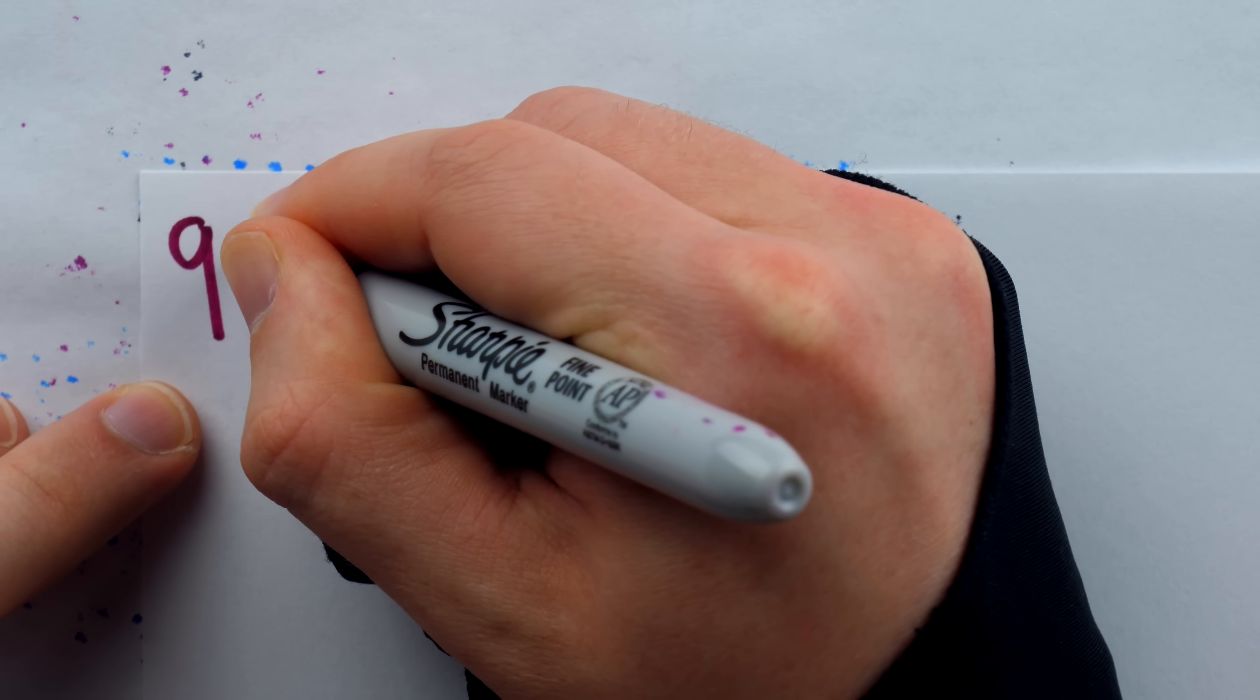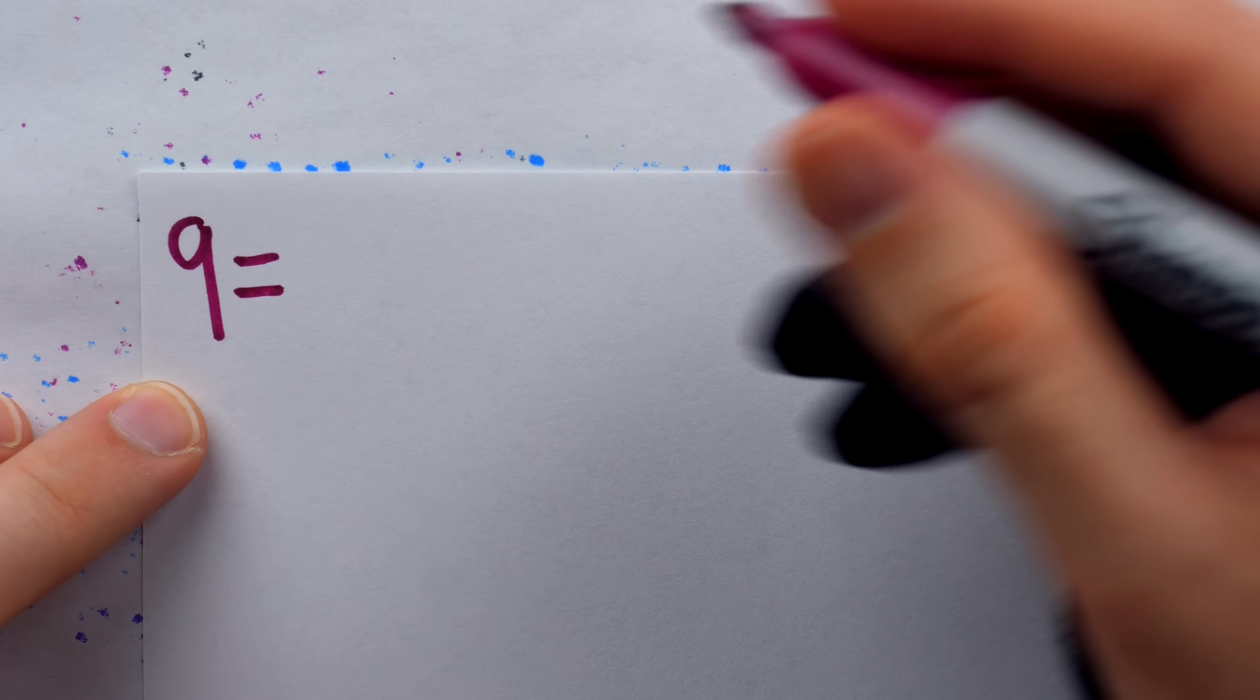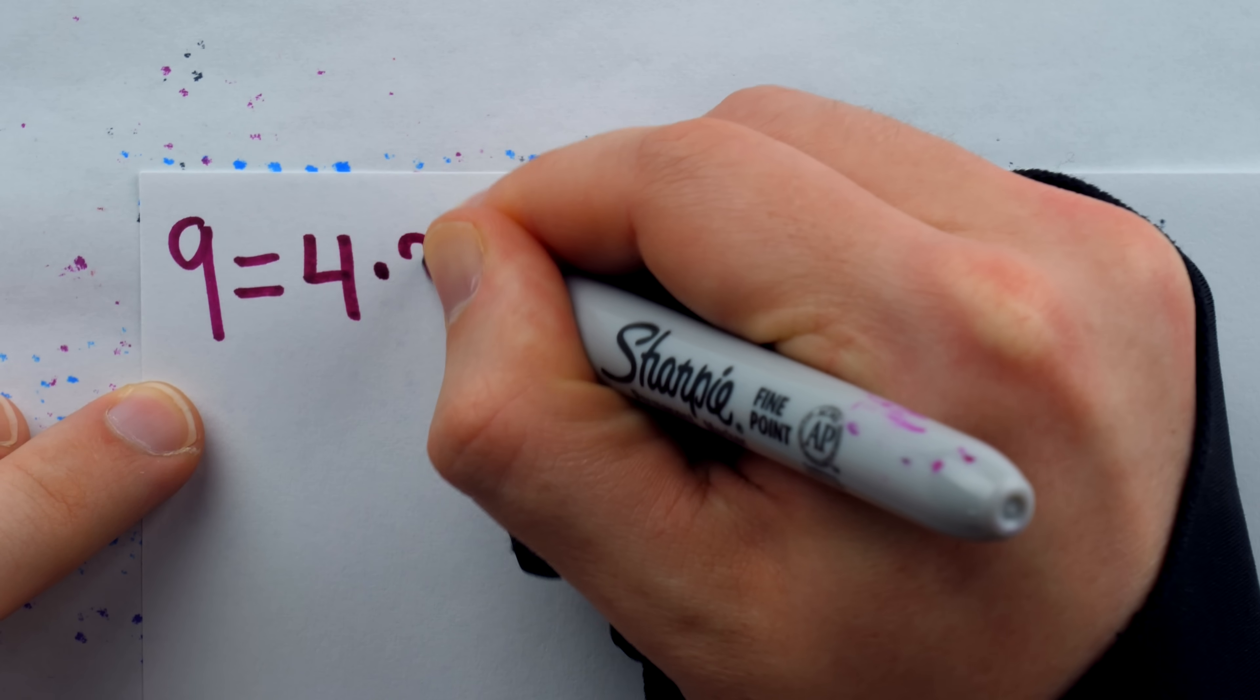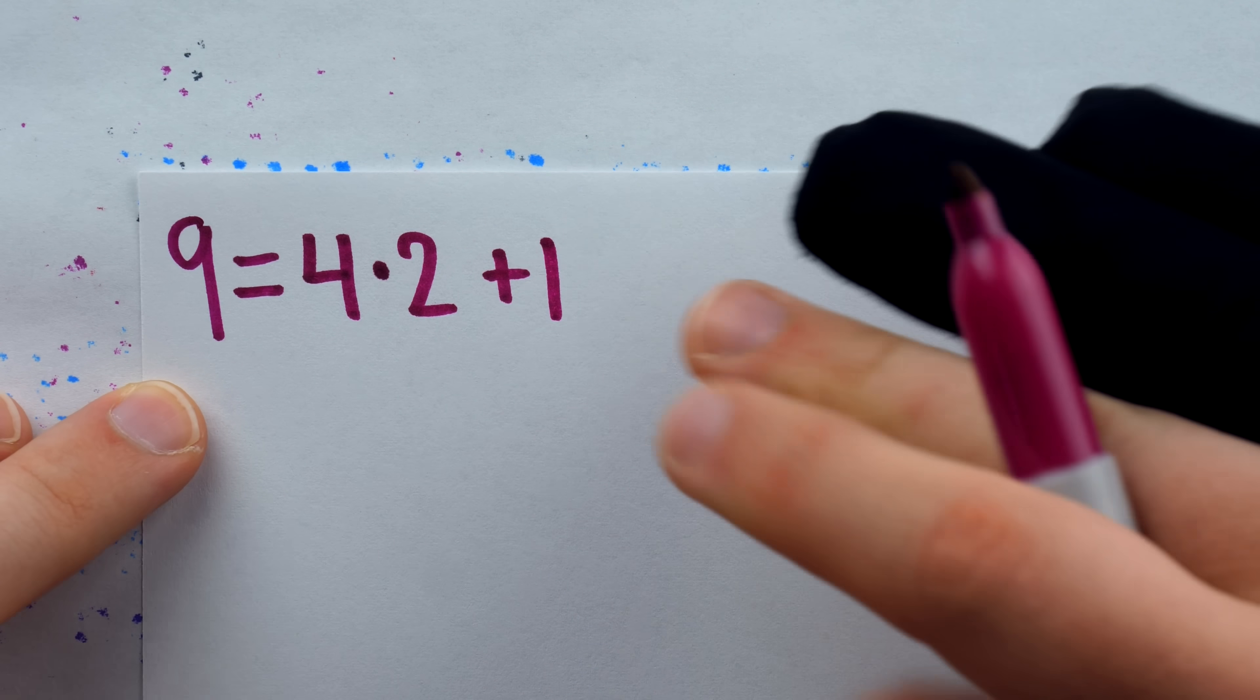For example, 9 divided by 4 is 2 with the remainder of 1. So we could write that 9 is equal to 4 times 2 plus that remainder of 1.